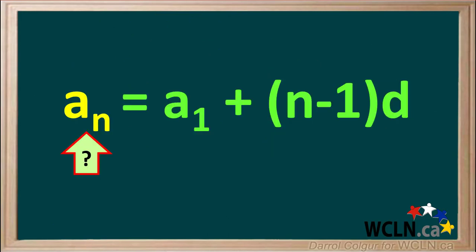In summary, the general equation for an arithmetic sequence — an equals a1 plus n minus 1 times d — can be used to find an unknown term an, or the first term a1, when we're given the values for the other variables. It is a very useful equation.